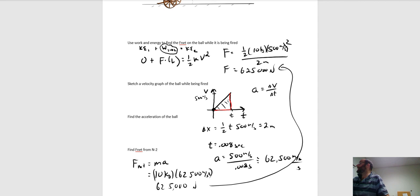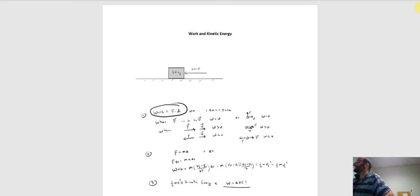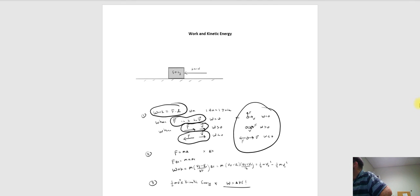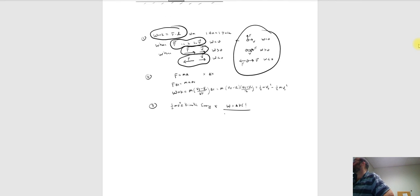To recap: work is force times distance with units of newton-meters (joules). Work is positive when force and velocity are in the same direction, negative when they're in opposite directions, and zero when force is perpendicular to velocity. Most importantly, the work done on a system equals the change in kinetic energy of the system. In upcoming lessons we'll expand this to include potential energies for a broader, more general work-energy framework.